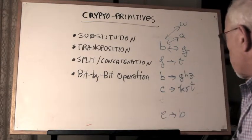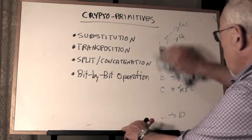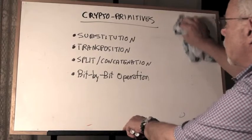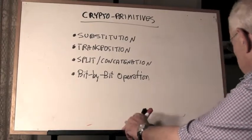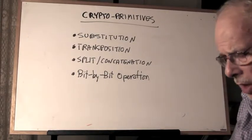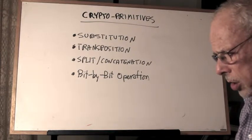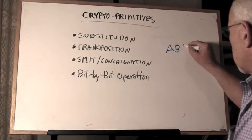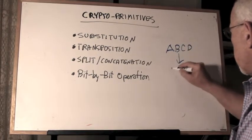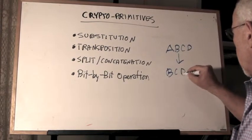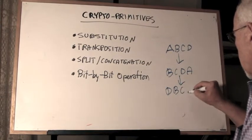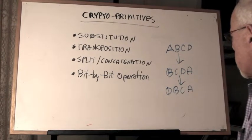So that's so much for substitution. Onward to transposition. Transposition is very simple, you don't even need a total alphabet. A transposition is simply changing the order. If I have something written A B C D, then B C D A is a transposition. D B C A is another transposition.